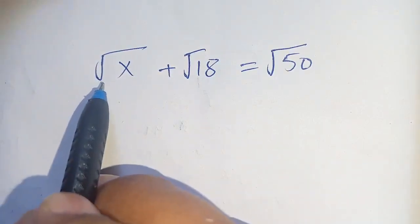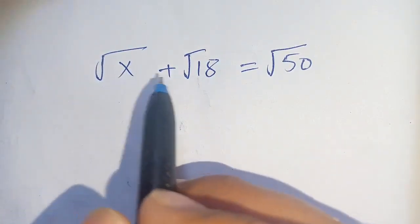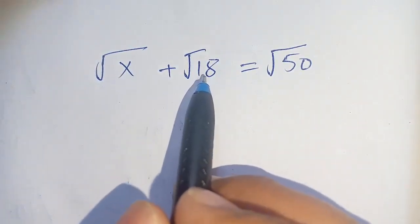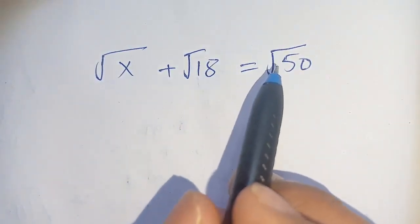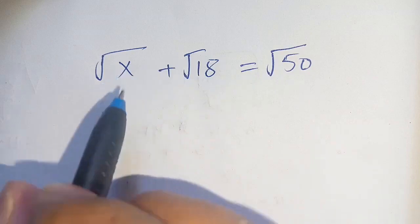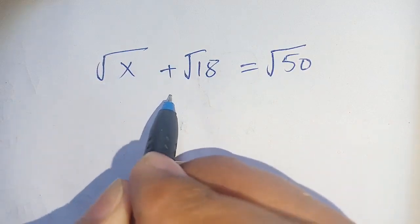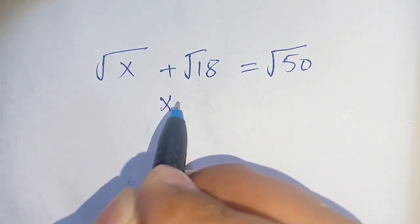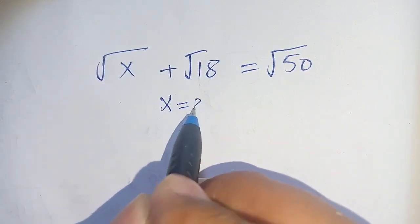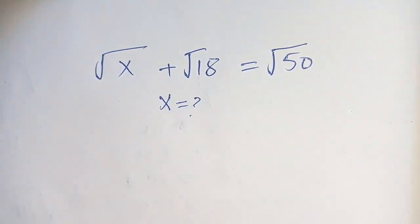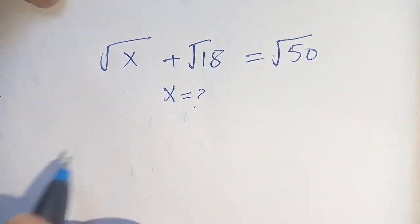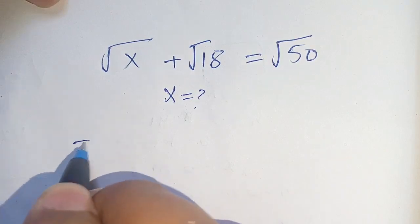Hello everyone. How to solve: square root of x plus square root of 18 is equal to square root of 50. We have to find the value of x which satisfies this equation. Let us solve this.